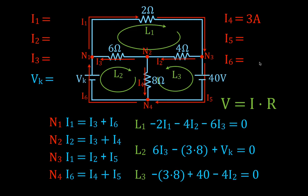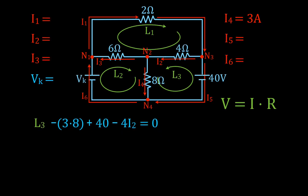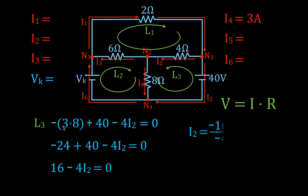We know I4 is 3 amps. The loop-three equation has only one unknown so we can solve for I2. Simplifying: minus 3 times 8 is minus 24, and minus 3 times 8 plus 40 minus 4I2 equals zero. Solving, we get I2 equals minus 16 divided by minus 4, so I2 is 4 amperes — the current through this branch right here. It's positive, so we chose the correct direction for that current.